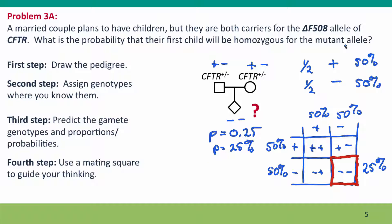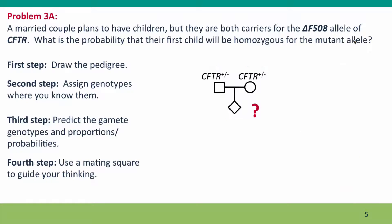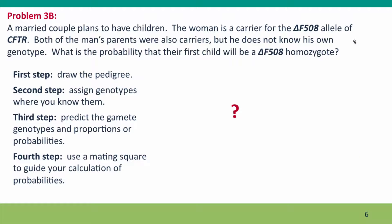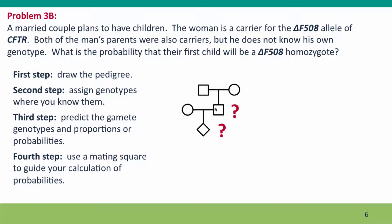Now here's a more complicated version of the problem. In this version, the father doesn't know his genotype. The mother knows she's a carrier, but the father only knows that both of his parents were carriers — he doesn't know if he himself is a carrier. We're again asked to calculate the probability that the child will be homozygous. Our first step is to draw the pedigree, which now spans three generations, including the father's parents.